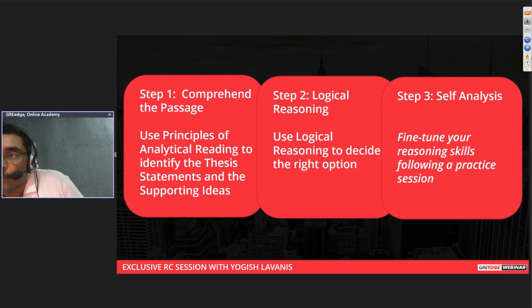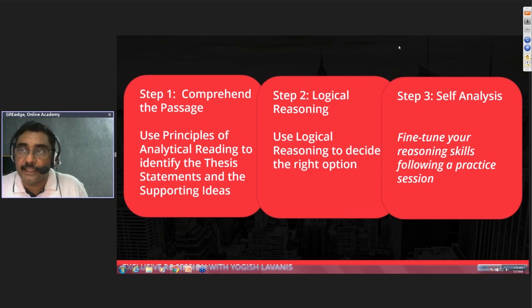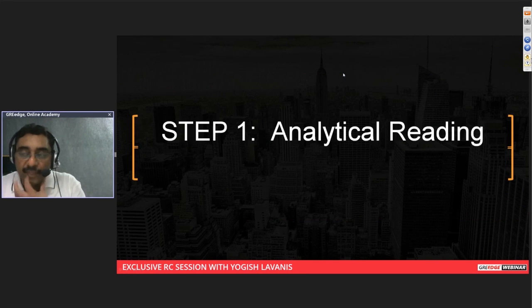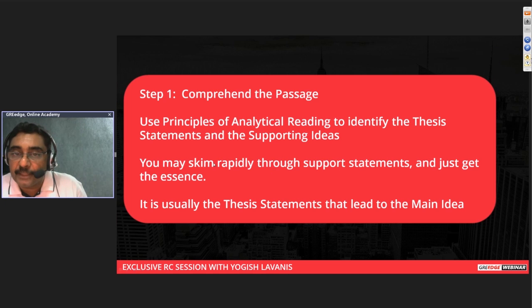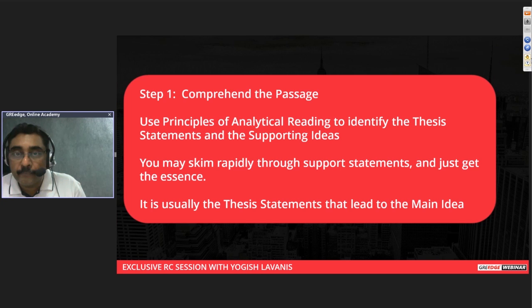Step one — analytical reading — is identifying the thesis statements and supporting ideas; you can skim through support ideas rapidly to save time. It is usually the thesis statements that lead to the main idea. Now we'll focus on step two — the reasoning part: once you've got the thesis statements, how do you zero in on the main idea?